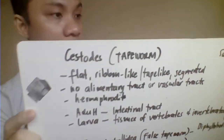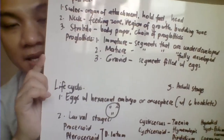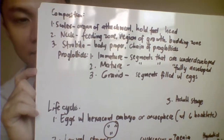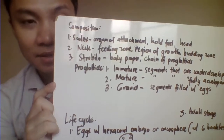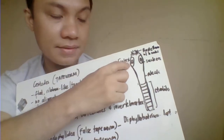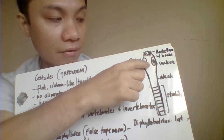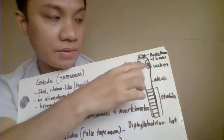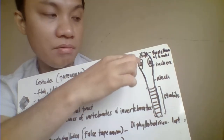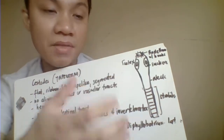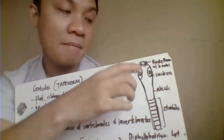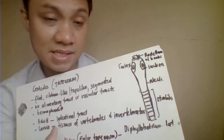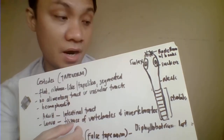The body of the entire worm is composed of the scolex, which is the head part and organ of attachment, also called the holdfast. The scolex has four cup-shaped suckers and the rostellum, which is the mouth part. Some species are armed with hooks or spines; others are unarmed, meaning no hooks or spines.